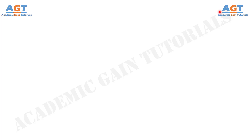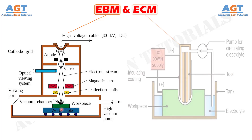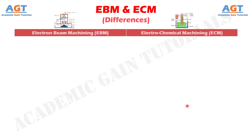Welcome to Academic Game Tutorials. In this video, we will look into the differences between electron beam machining and electrochemical machining. In the electron beam machining process, a high velocity focused beam of electrons are used to remove the metal from the workpiece. This process is best suited for the micro cutting of materials. Electrochemical machining is a completely different process than electron beam machining. Let's look into the basic differences between electron beam machining and electrochemical machining in a tabular form.